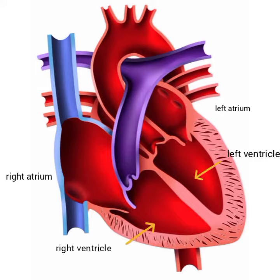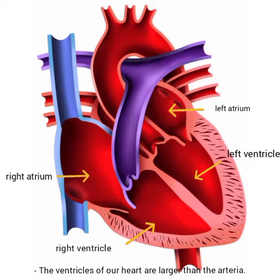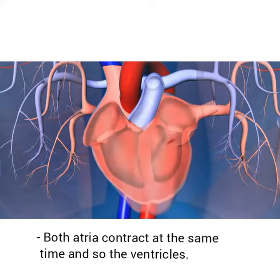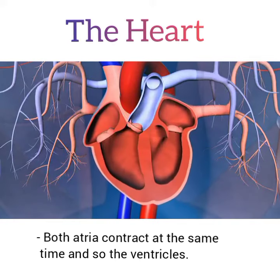The lower two chambers are called ventricles. Upar walle do khane atria kehlate hain jabke nishle do khane ventricles kehlate hain. The ventricles of our heart are larger than the atria. Ventricles ka size atria se bada hota hai.